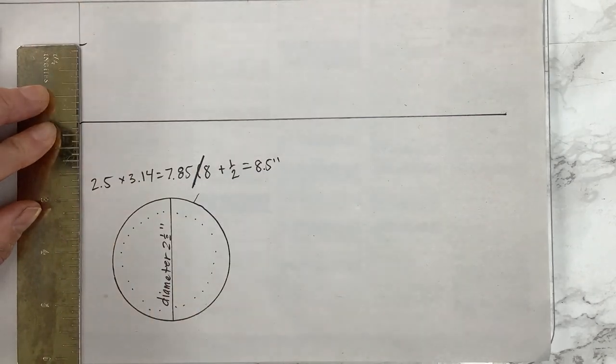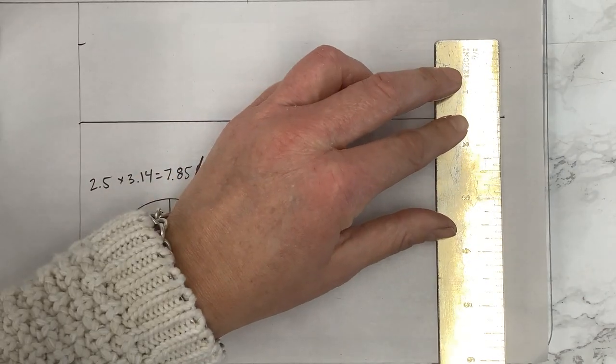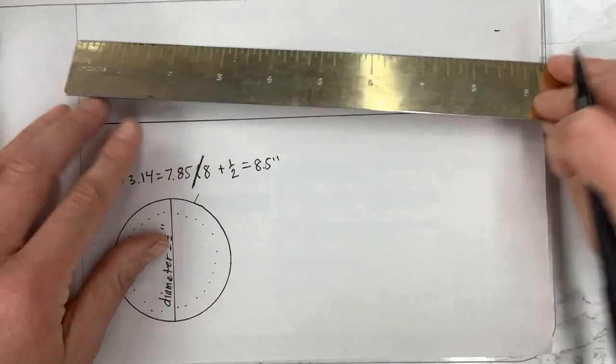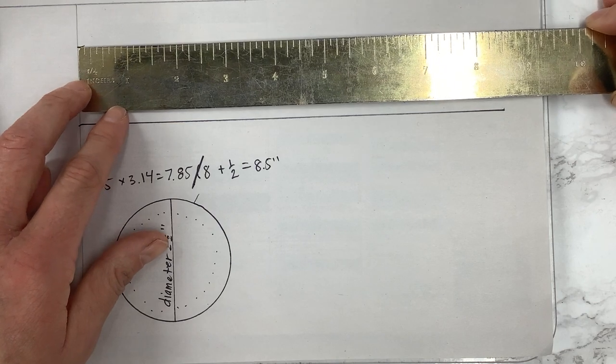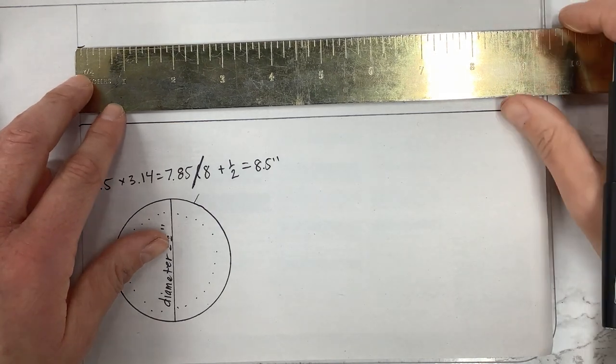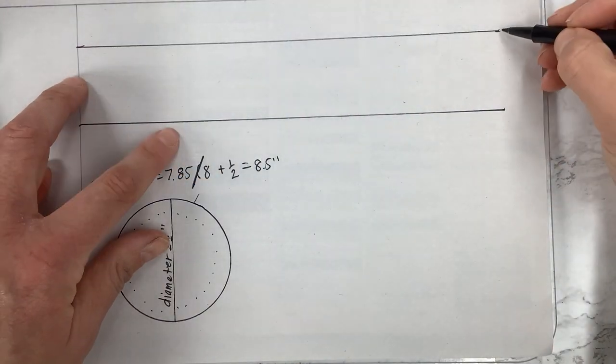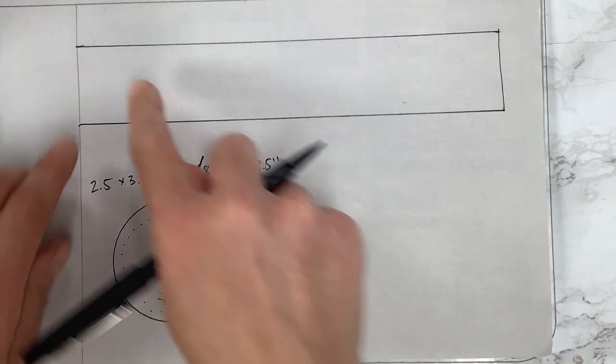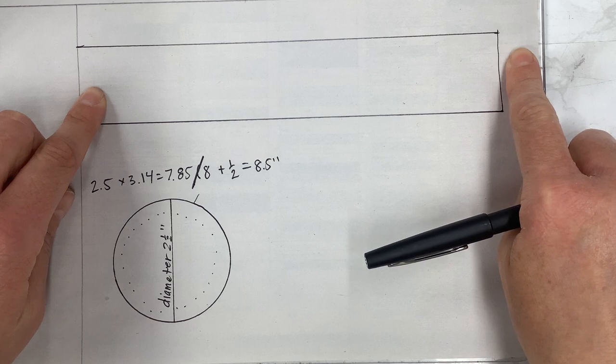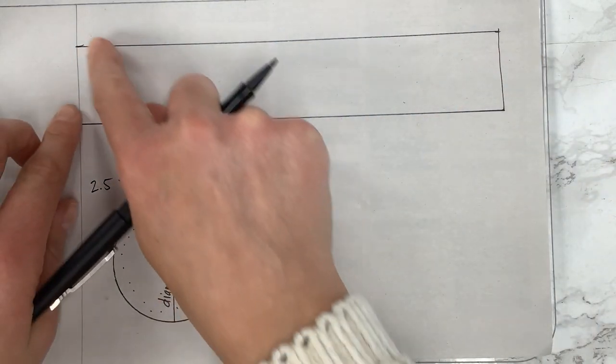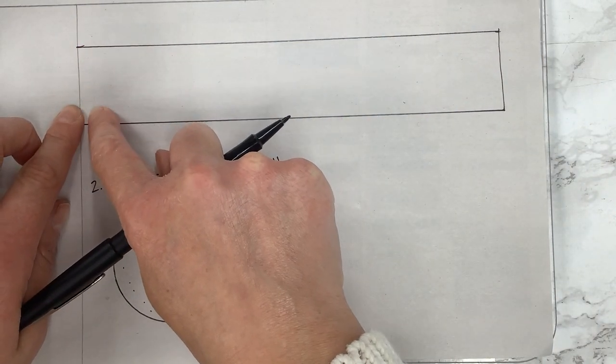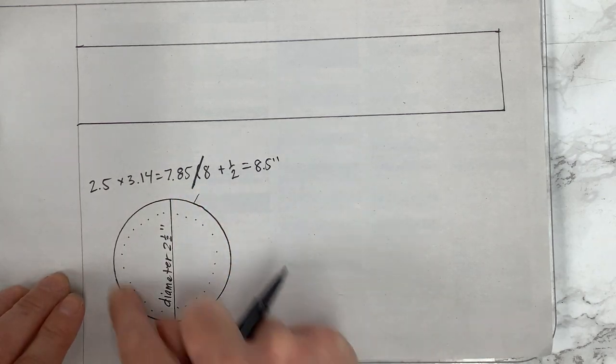So I would measure one and a half inches. Finish up that rectangle and there we go. This is my side piece that I would fold in half, do one stitch line. Once that's done then I would sew it along here.